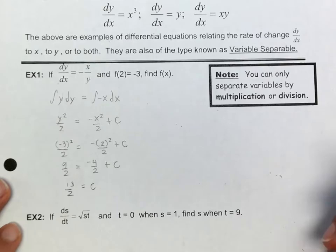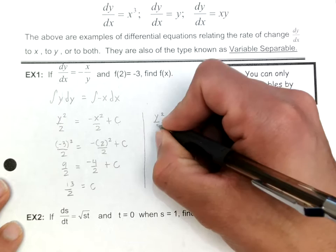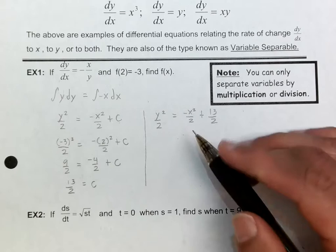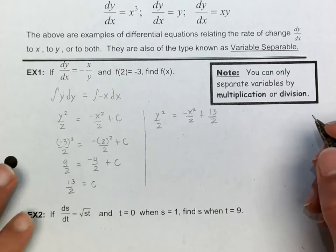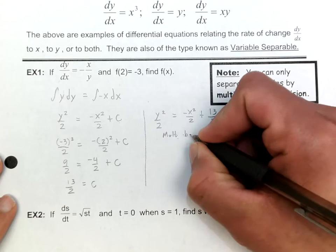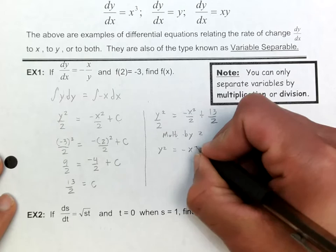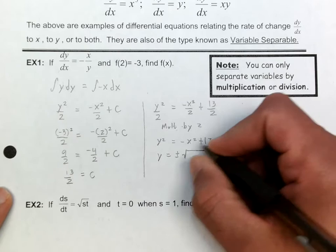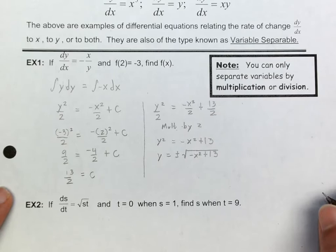So now my equation is y squared over 2 is equal to negative x squared over 2 plus 13 over 2. My goal is to get f of x, which means I need to solve for y. First I multiply everything times 2, giving me y squared is equal to negative x squared plus 13. Then I take the square root of both sides, giving y is equal to plus or minus the square root of negative x squared plus 13.